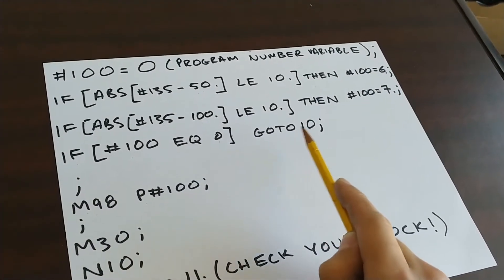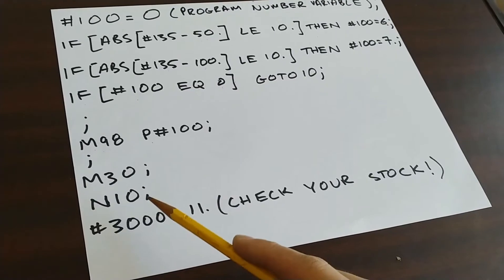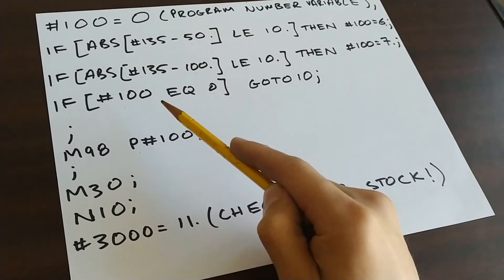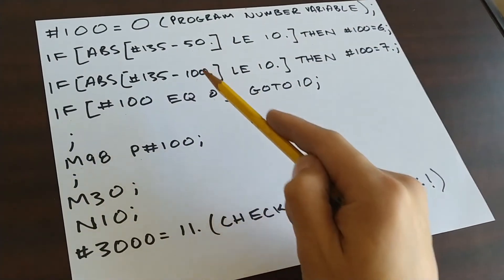Which will, just like before, be the alarm line. If I have something way out of tolerance that doesn't match either of these situations.